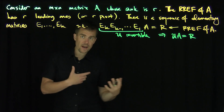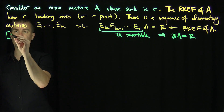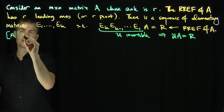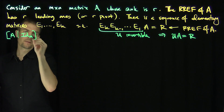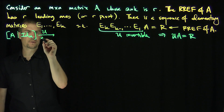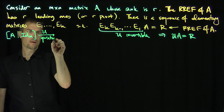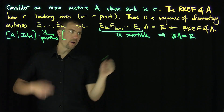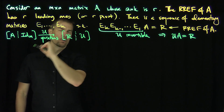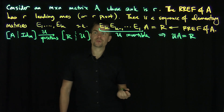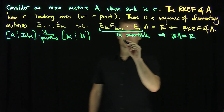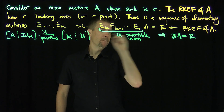If we concatenate A with the identity matrix — A is an M by N matrix so it has M rows — and apply the sequence of U operations, we get the matrix R on the left (the reduced row echelon form) and the identity is transformed into U on the right. The structure of U is an M by M matrix.